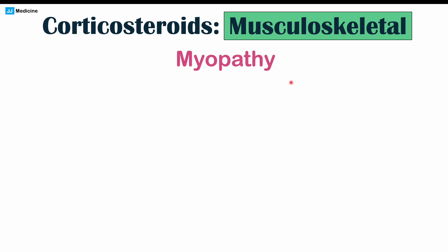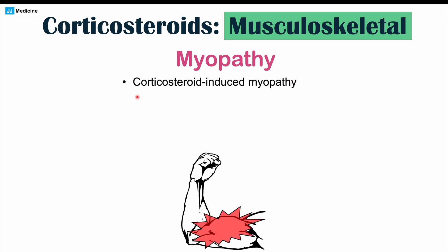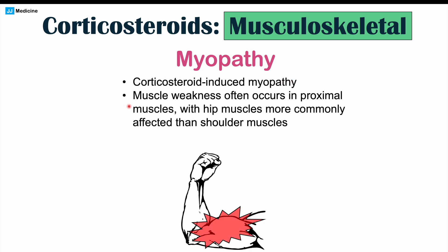We can also see myopathy with corticosteroid use — called corticosteroid-induced myopathy. What we'll generally see is muscle weakness occurring in proximal muscles, most commonly the hip muscles, but the shoulder muscles can be affected as well. It can often be painless at the beginning, with just weakness at first, and then over time we can start to see muscle aches and pains.